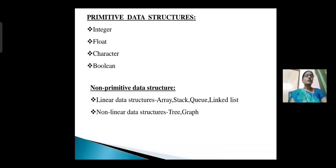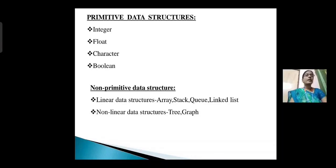Next, non-primitive data structures. Non-primitive data structures are more complicated data structures. They can be divided into two types: linear data structures and non-linear data structures. Linear data structures are those where data elements are organized in some sequence. The list of operations applied on linear data structures are: add an element, delete an element, traverse the element, sort the list of elements, and search for a data element.